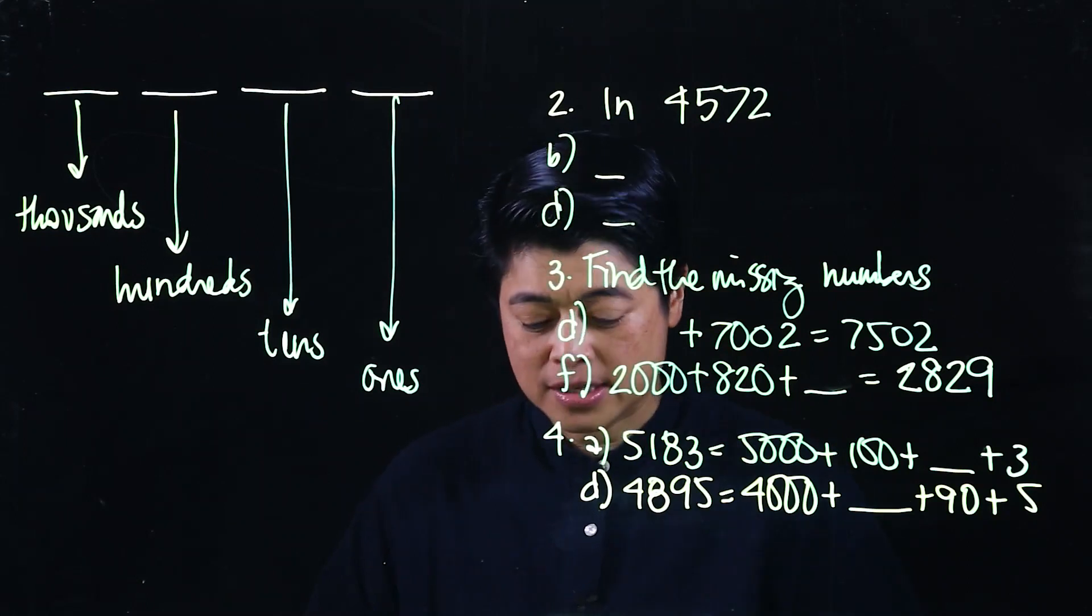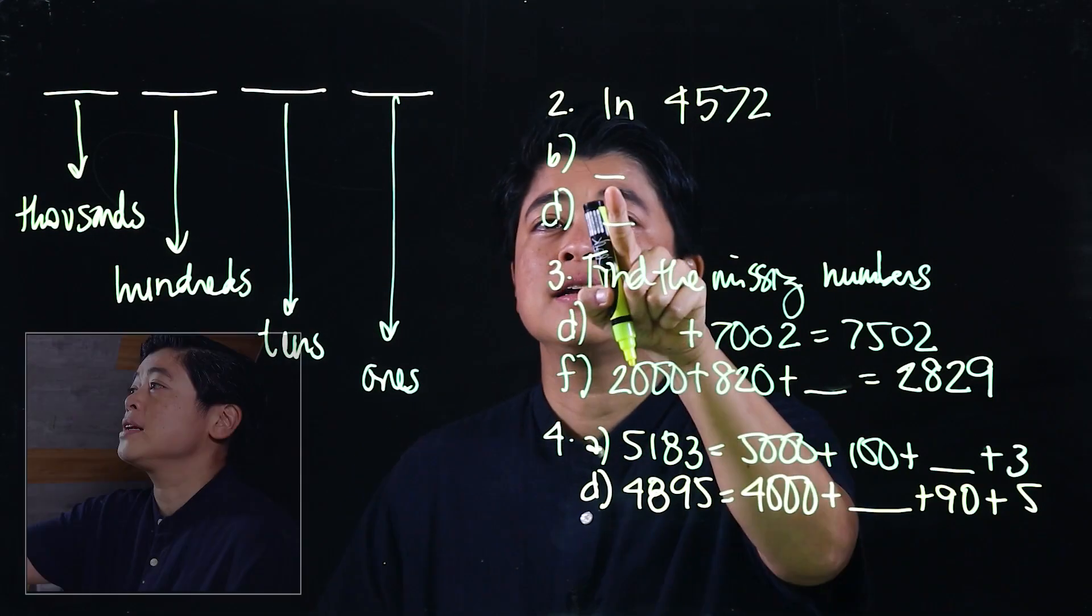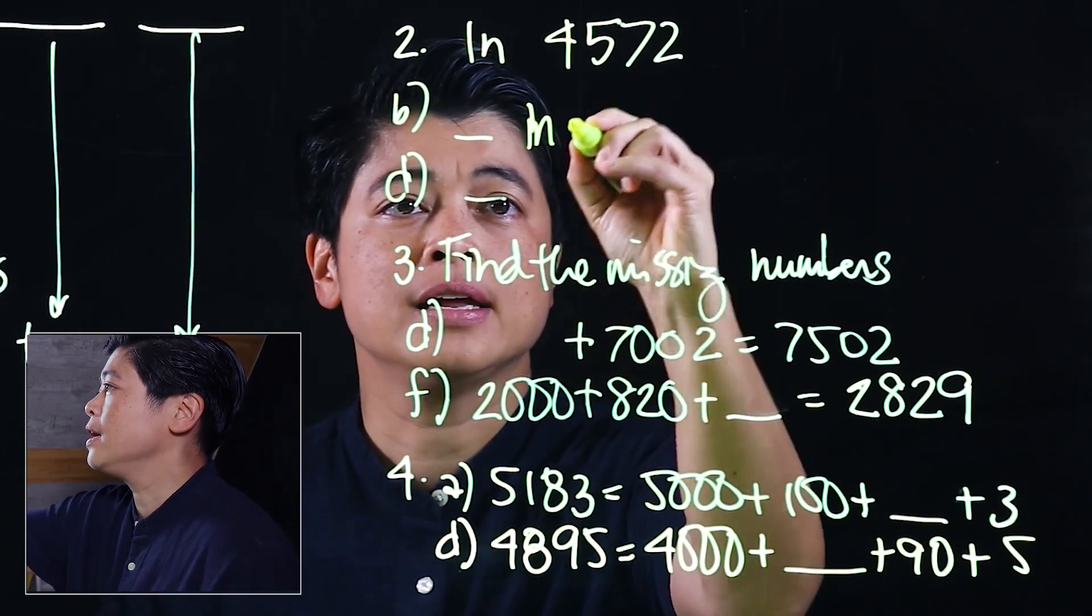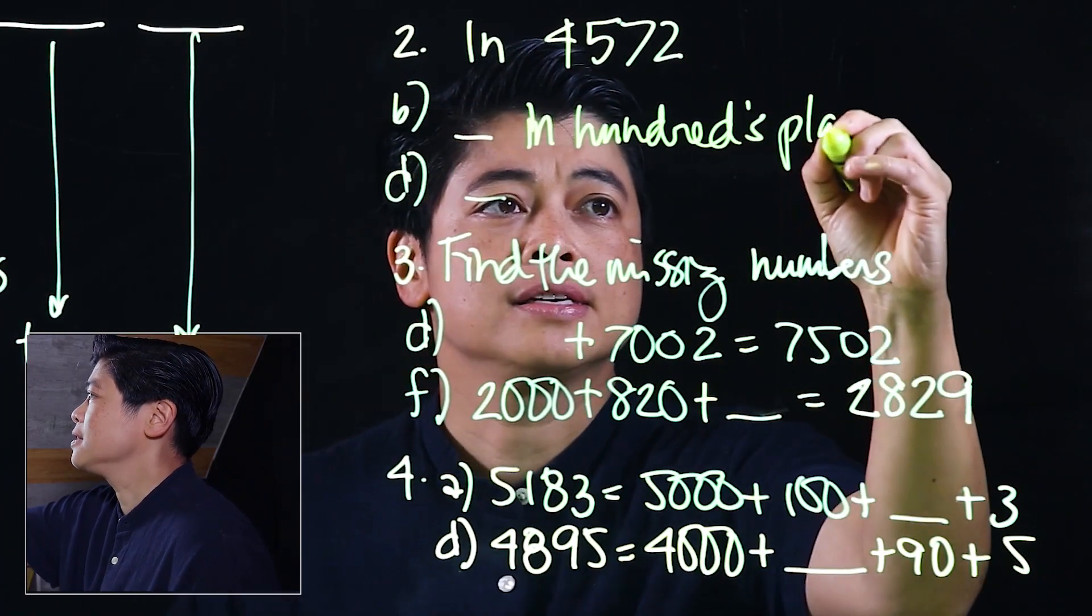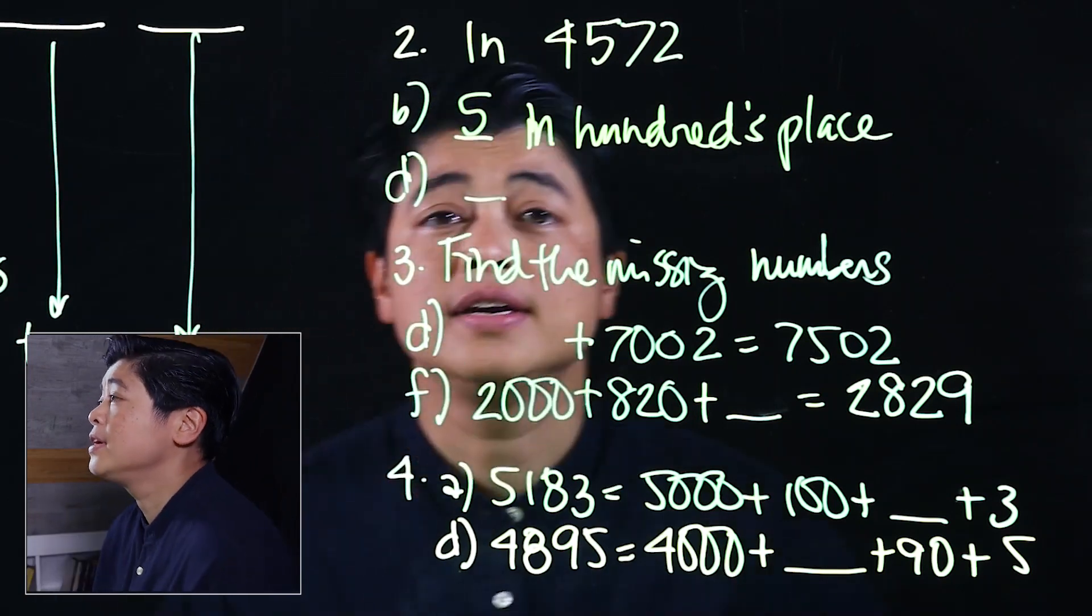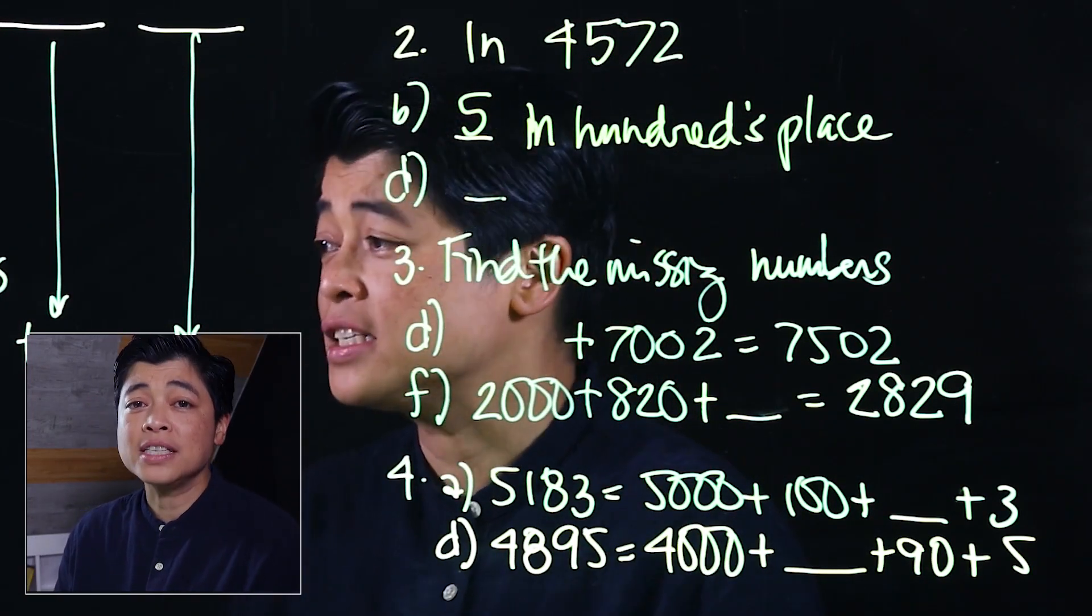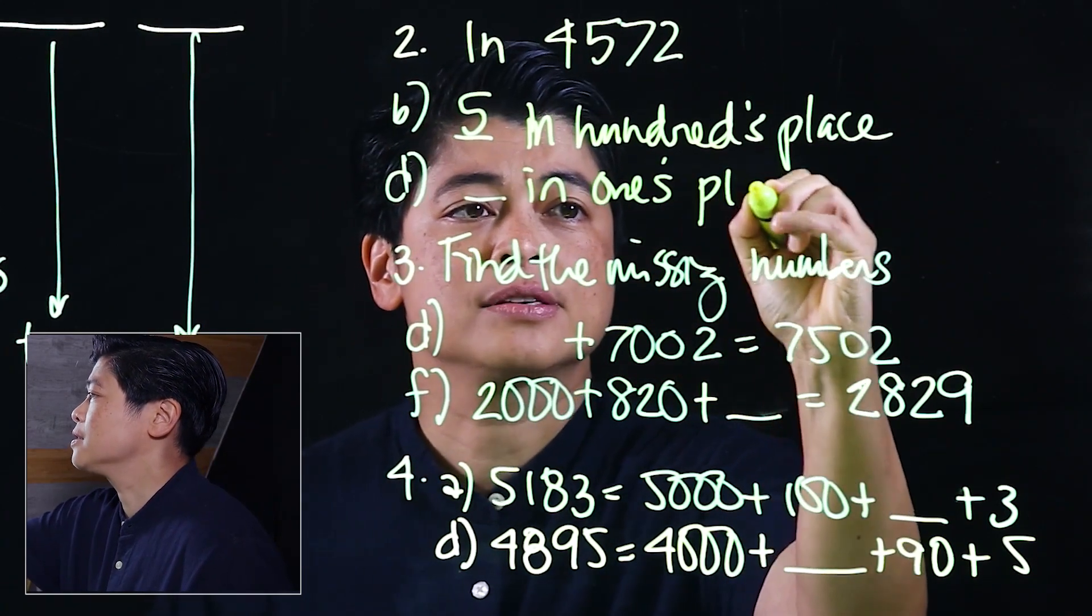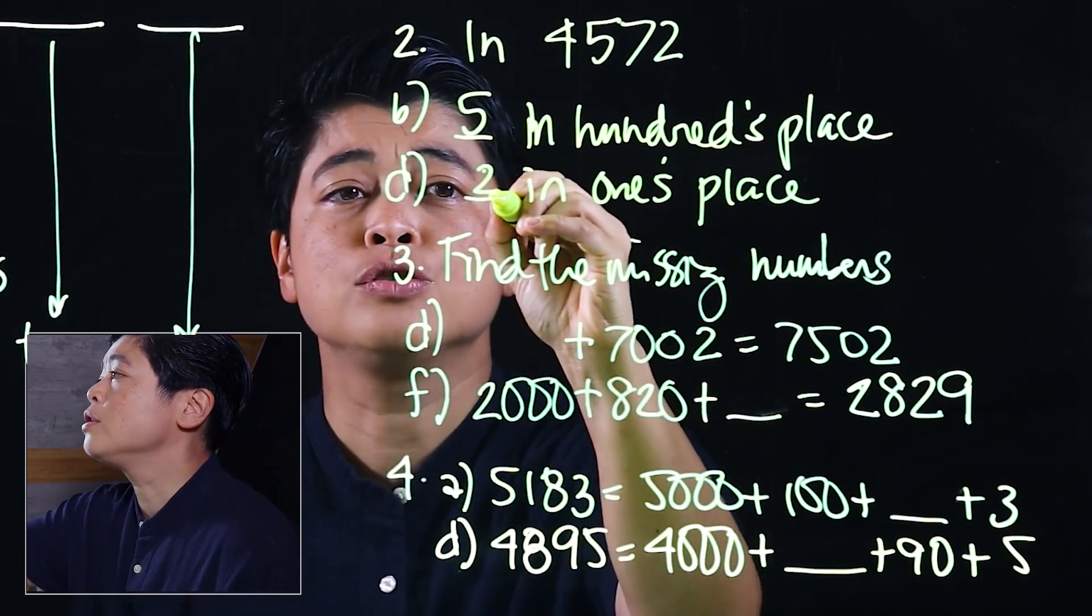In 4572, B says the blank digit is in the hundreds place. So the hundreds place is the 5. In letter D it asks what is in the ones place. So the one that is in the ones place will be the 2.